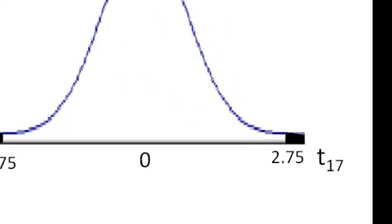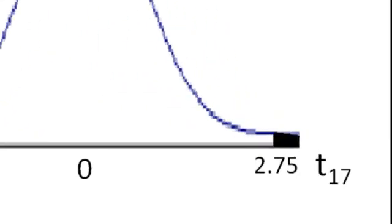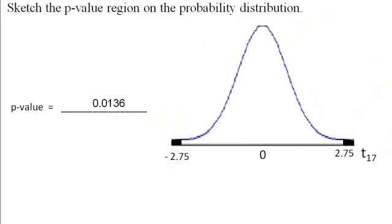Now notice that we're looking at a t-distribution with 17 degrees of freedom, and our test statistic was 2.75. But remember that this is a two-sided test, so I need to add the value negative 2.75 to the other side of the graph. And then the p-value is going to be the total area under the curve to the right of 2.75 and to the left of negative 2.75.